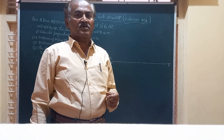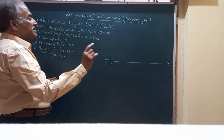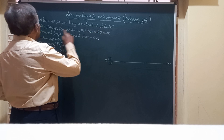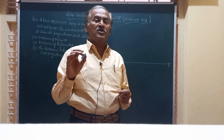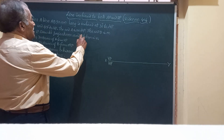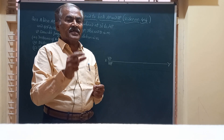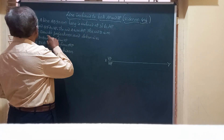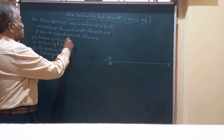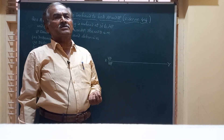The question for today's video reads as this: a line AB, 90 mm long — that means there is a line whose true length is 90 mm — and it is inclined at 30 degrees to HP and 45 degrees to VP. The end A is on HP, and the end B is on VP. Draw the projections of the line.